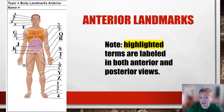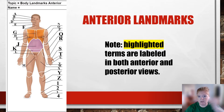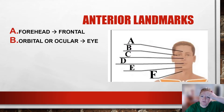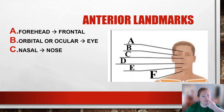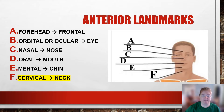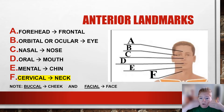If you see a highlighted term in this video, that means it has been labeled in both the anterior and the posterior views. For the anterior head and neck, we have: frontal, orbital (or ocular), nasal, oral, mental — like the thinker — cervical, buccal, and facial.